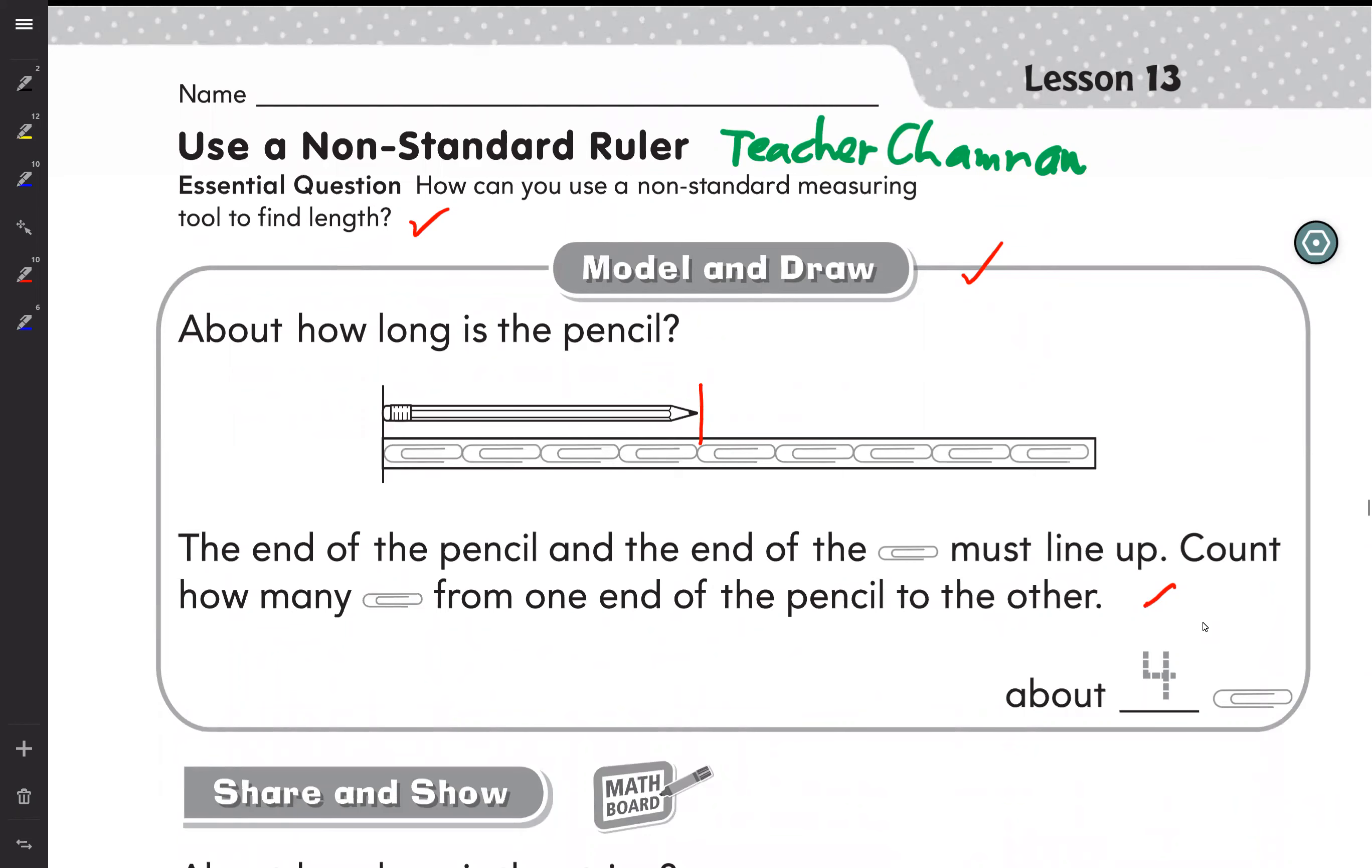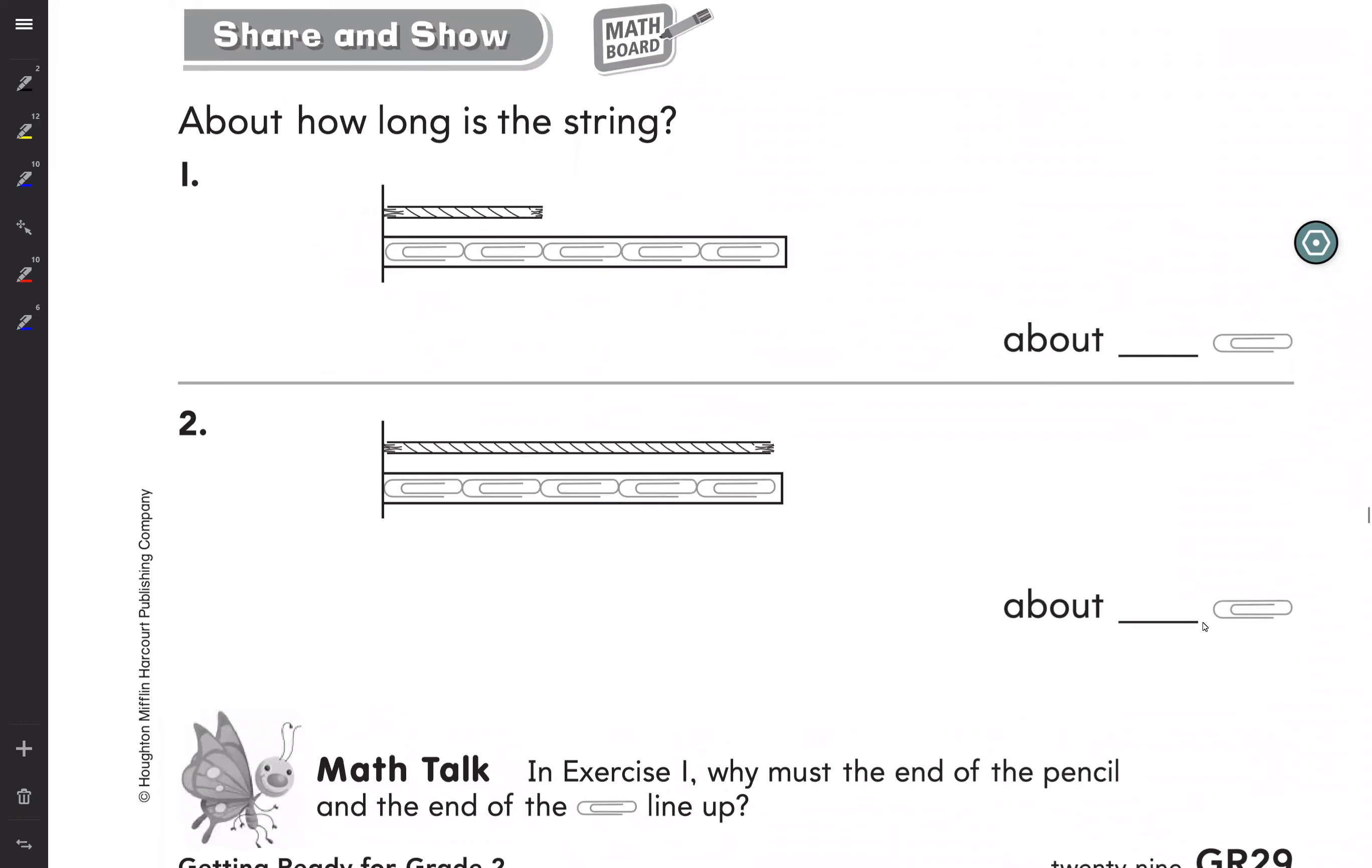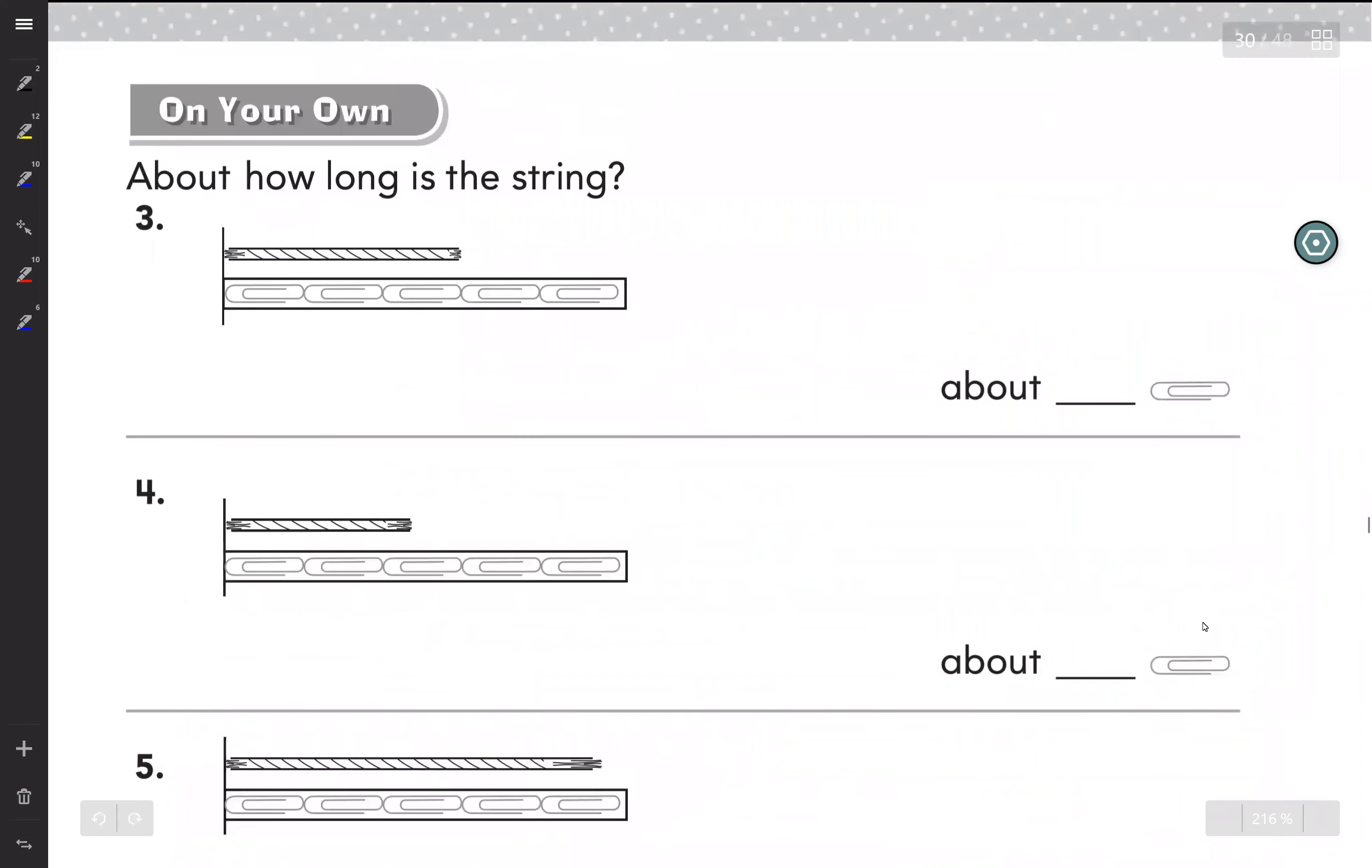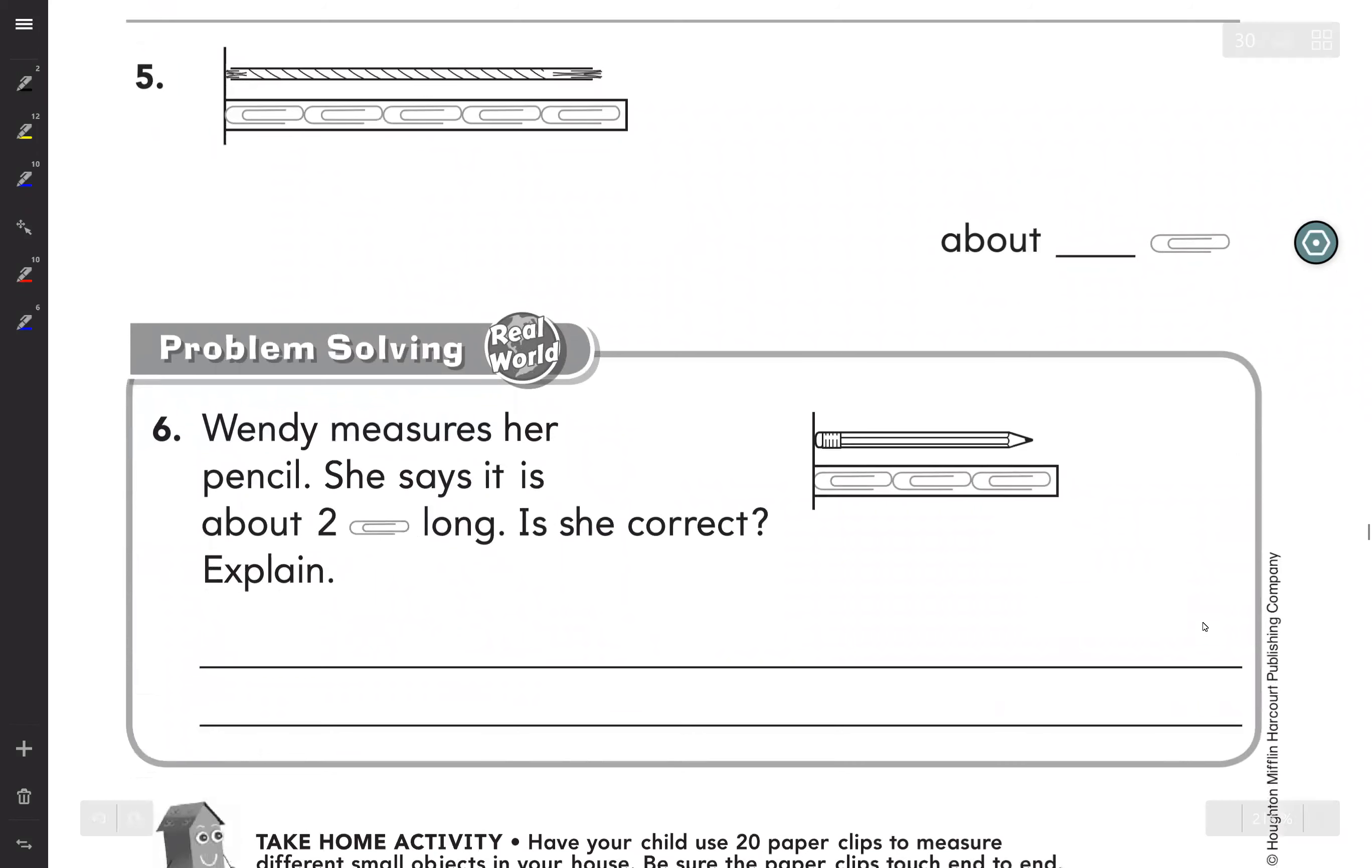Now Share and Show: About how long is this string? Number 3 - it's about two clips. Number 4 - one, two, three, four, five clips. Number 5 - it's about five clips.